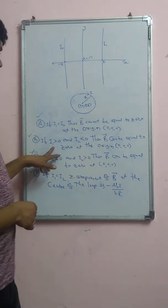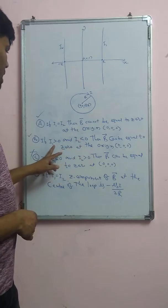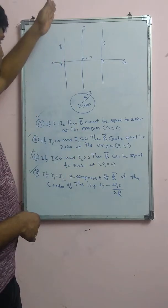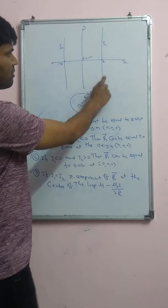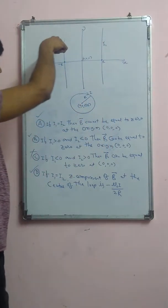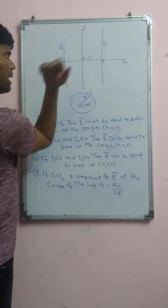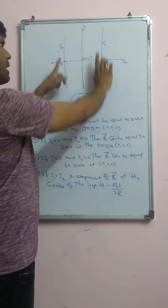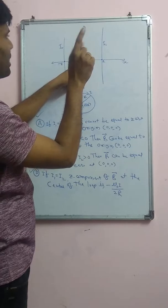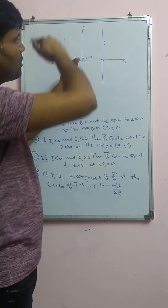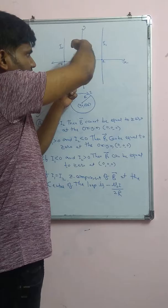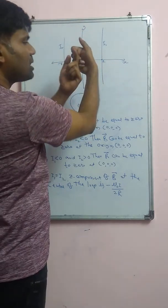Option B: i1 greater than 0 means current along positive y direction; i2 less than 0 means current along negative y direction. The magnetic field due to i1 is directed out of the board, and because i2 is in the opposite direction, the magnetic field due to i2 is also out of the board. Together, these two wires produce a net magnetic field along the positive z direction. The circular loop carries current in the clockwise direction, producing a field into the board, i.e., along the negative z direction.